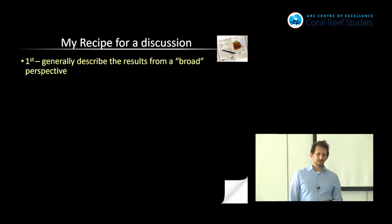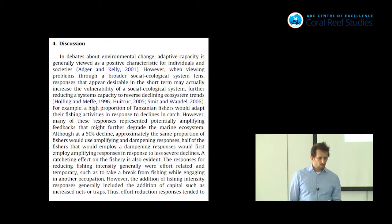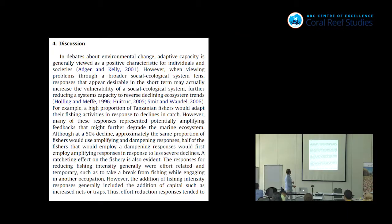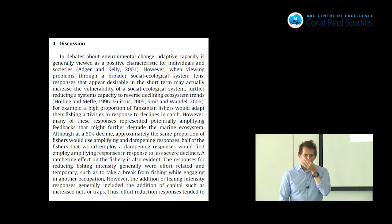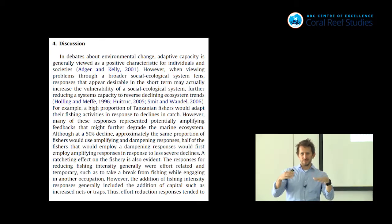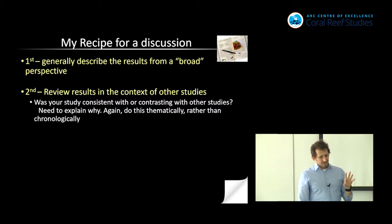My recipe for discussion is that I generally describe my results from a broad perspective. Here's an example from a paper I did: 'In debates about environmental change, adaptive capacity is generally viewed as positive characteristics for individuals and societies. However, when viewing problems through a broader social-ecological systems lens, responses that appear desirable in the short term may actually increase the vulnerability of the social-ecological system.' That's stepping back and taking a high-altitude view — a sentence or two that really gets it at that high level.